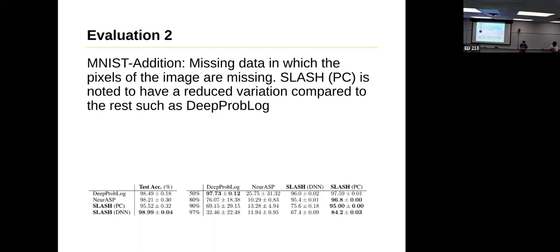That's actually Evaluation 3. That's the really cool one. This is just like I've removed pixels from both images, right, and you want this sum. Yeah. What's the difference between like DNN, I mean the structure of SLASH-DNN and between SLASH-PC? It's really just what's attached to SLASH, so one's a neural network and the other one's the probabilistic circuit.